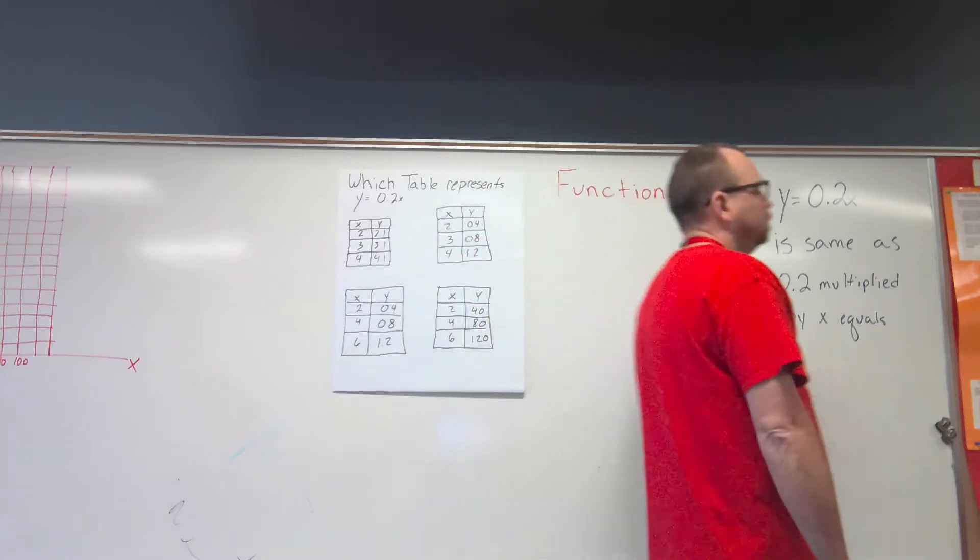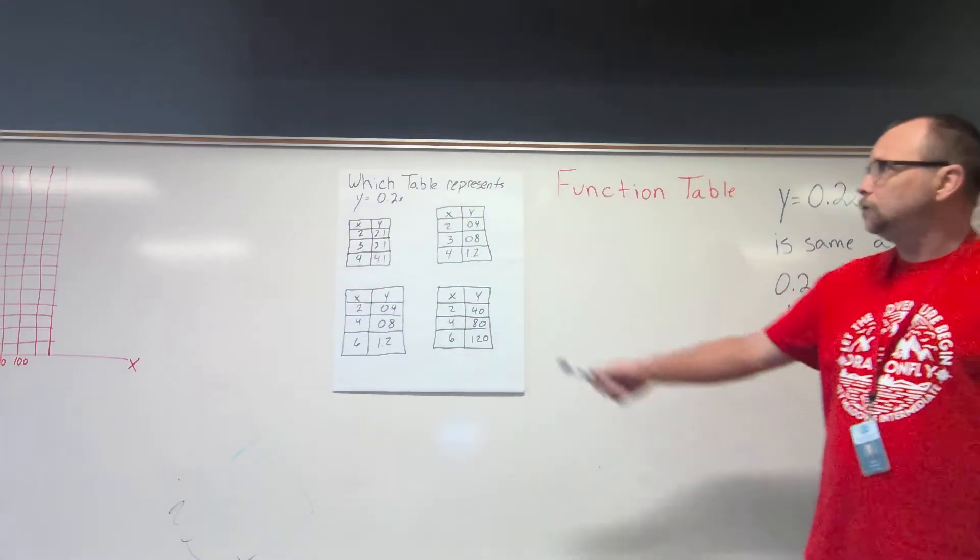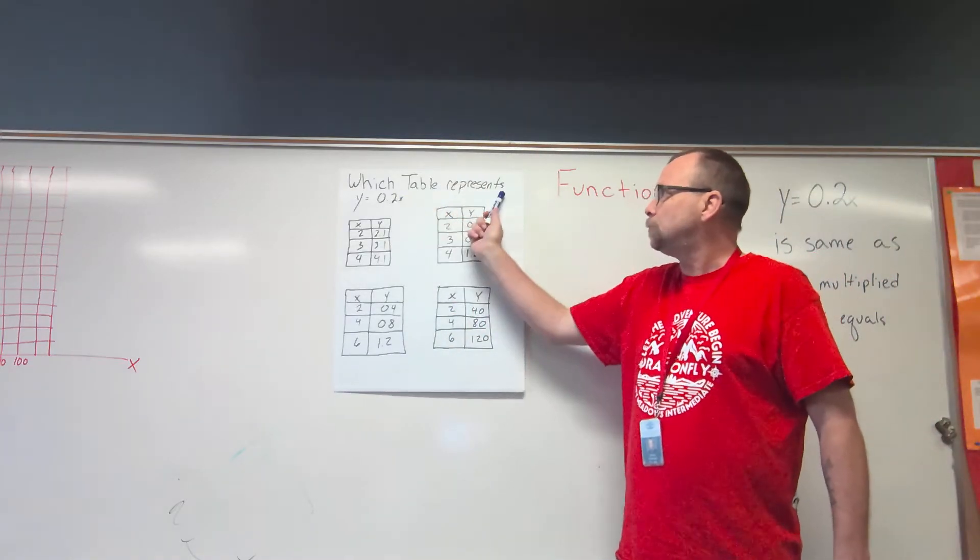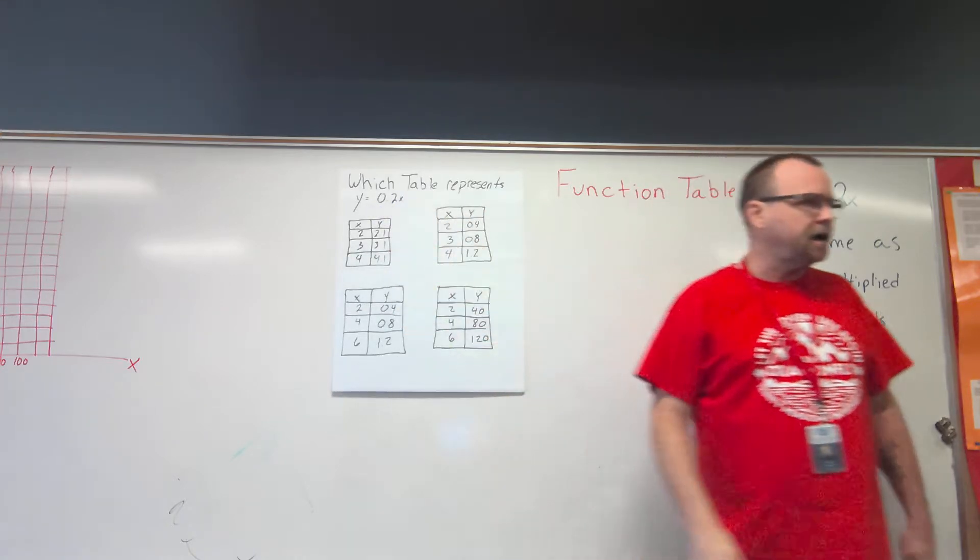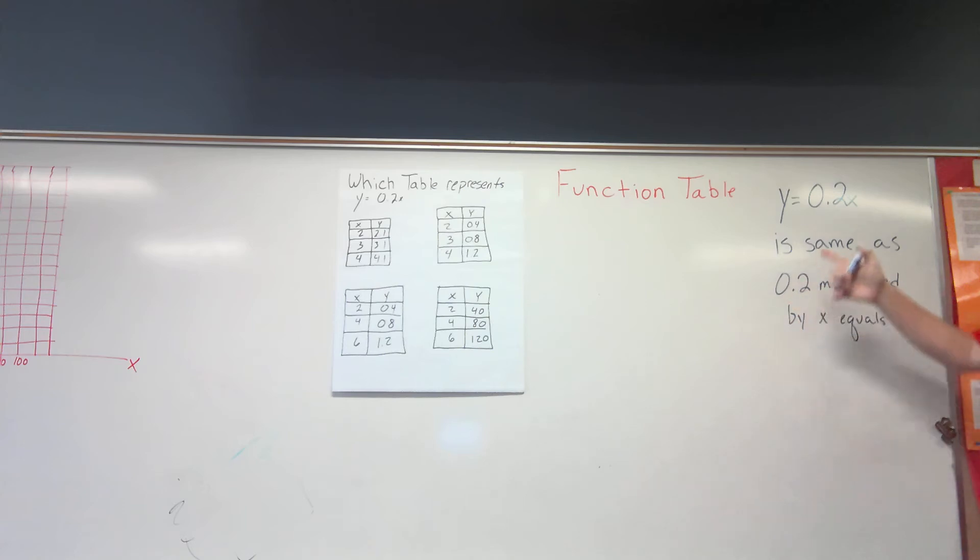This is a function table. The rule that they gave you is—the question was which table represents y equals two tenths times x. Y equals two tenths times x is the same as two tenths multiplied by x equals y.